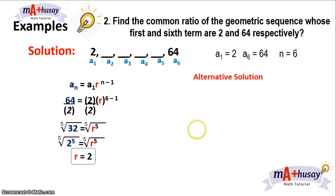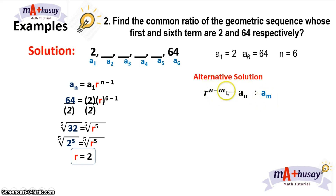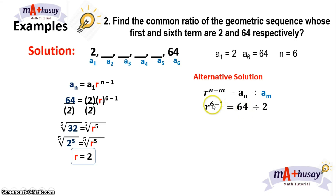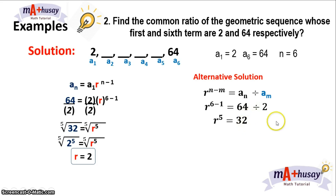Let me show you an alternative solution on how to solve for the common ratio. We can solve for the common ratio using this formula: divide the last term, a sub n, by a sub m, and the exponent of the common ratio should be n minus m. So the sixth term is 64 divided by 2, the first term. Since 64 is the sixth term, you have 6 on top, and 2 is the first term, so you have 1. The exponent of r should be 5. So 64 divided by 2 is 32, and getting the fifth root of both sides, you will have r equals 2.